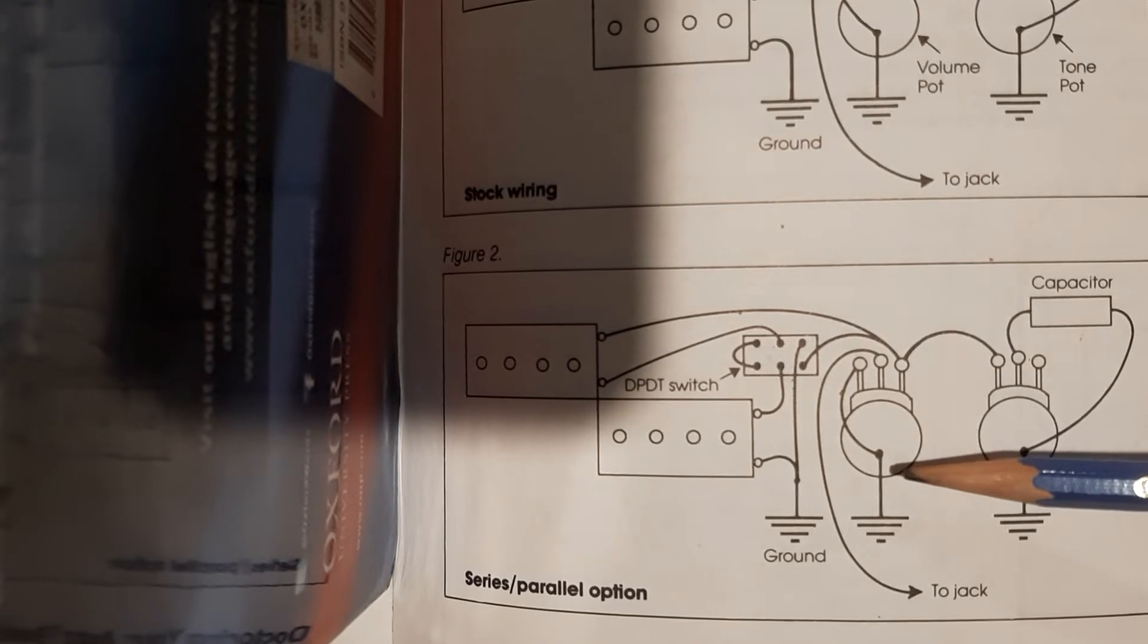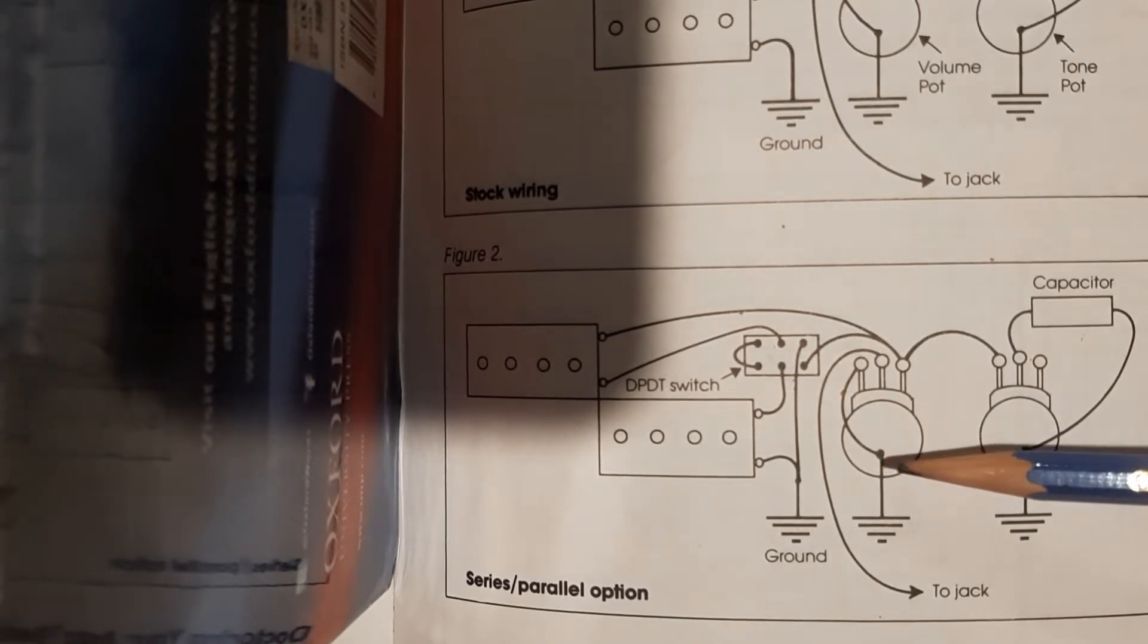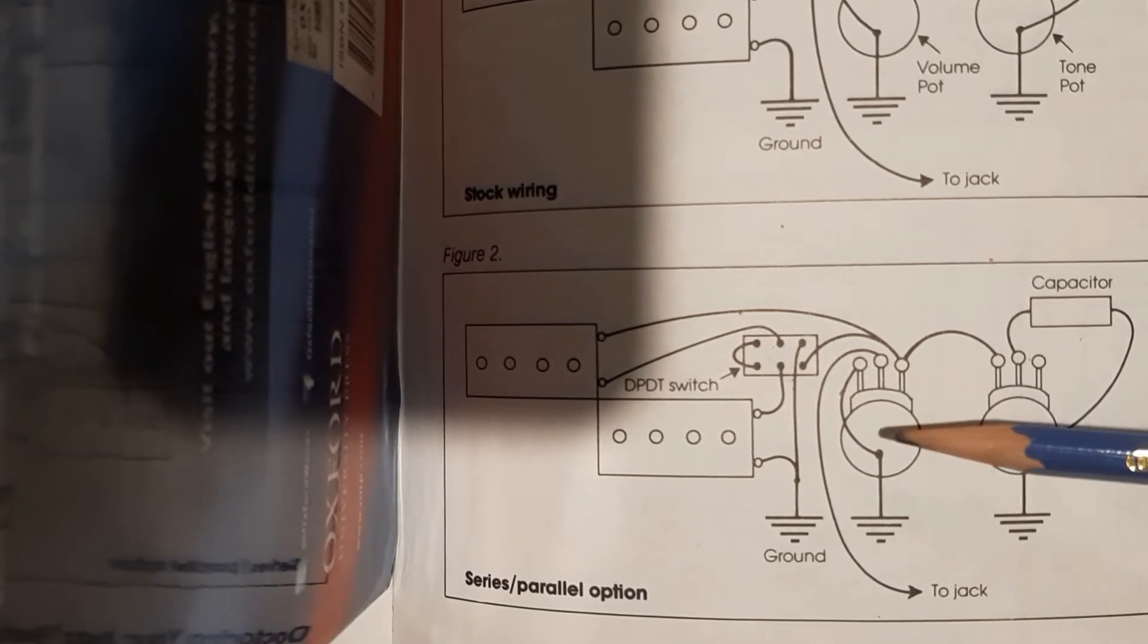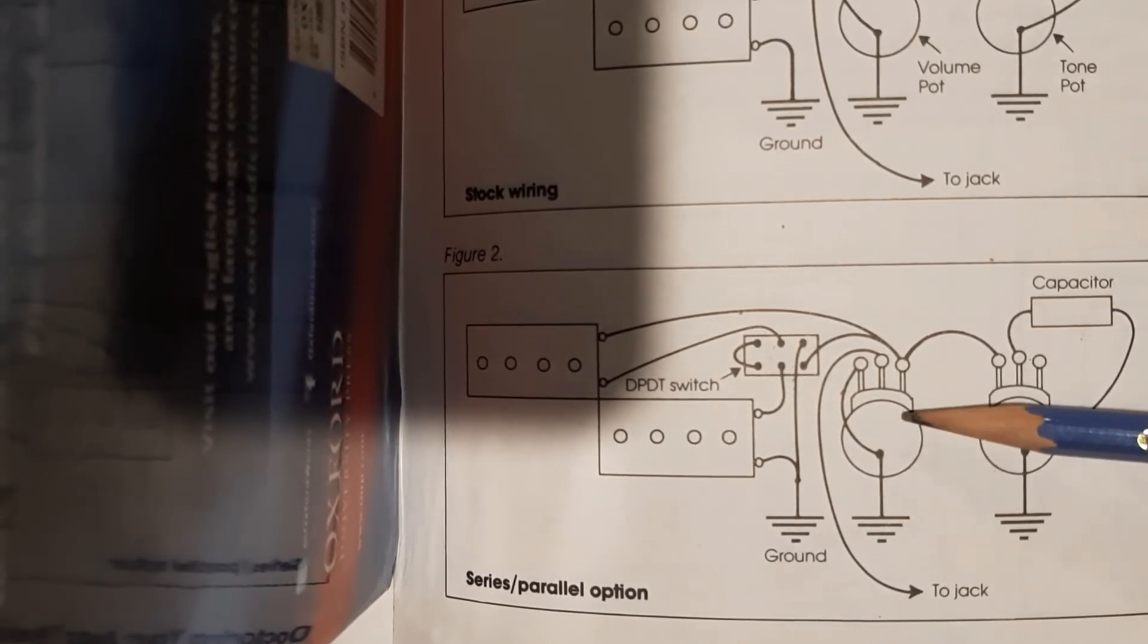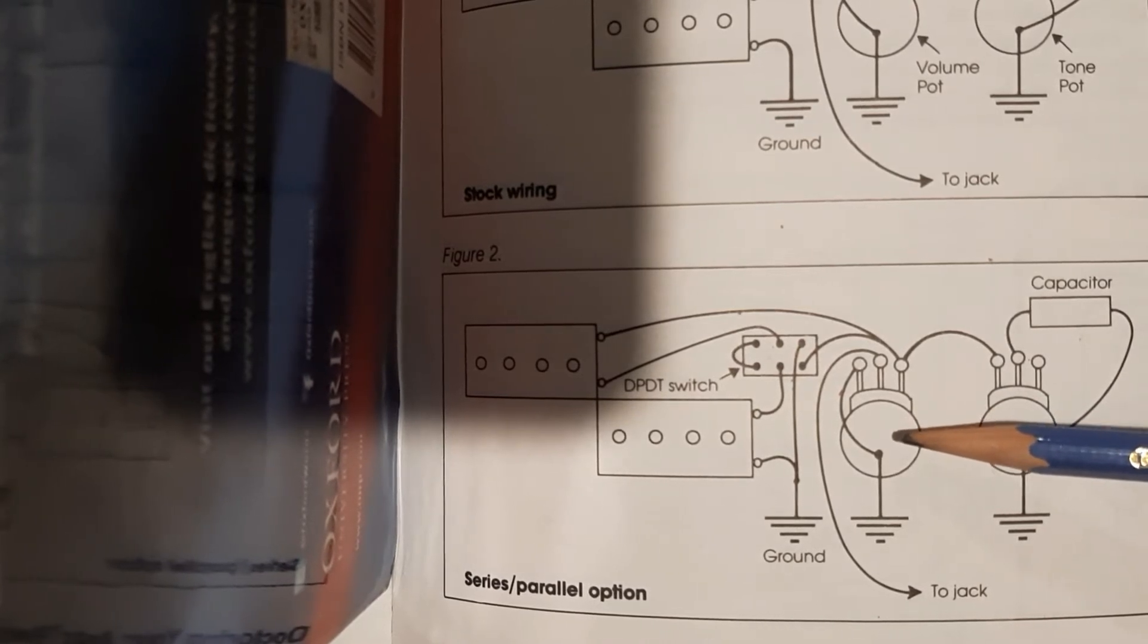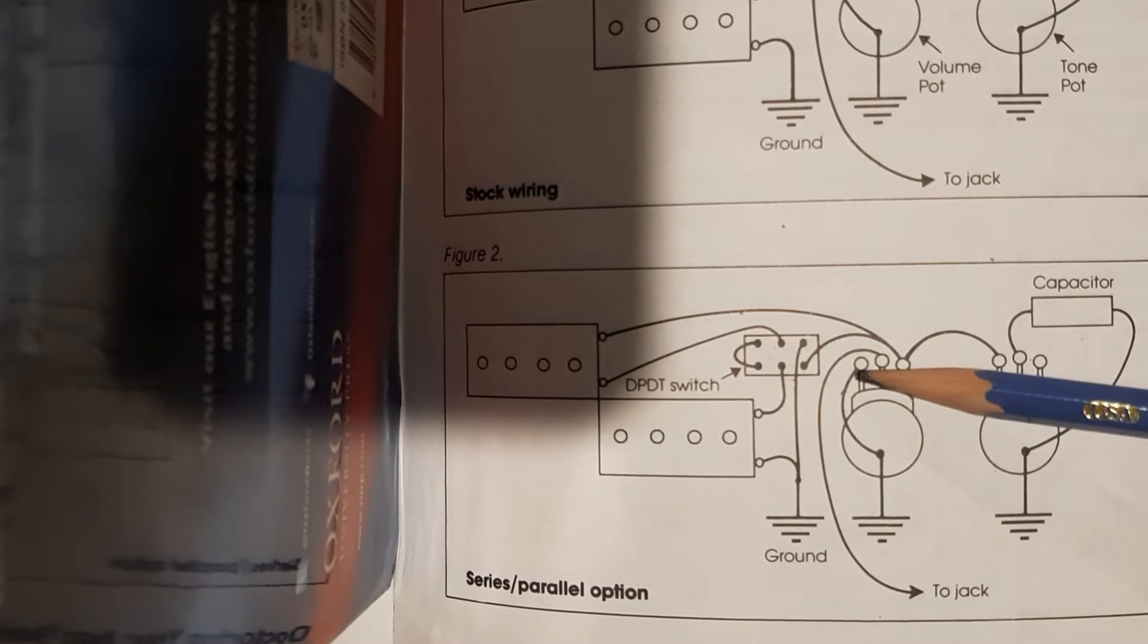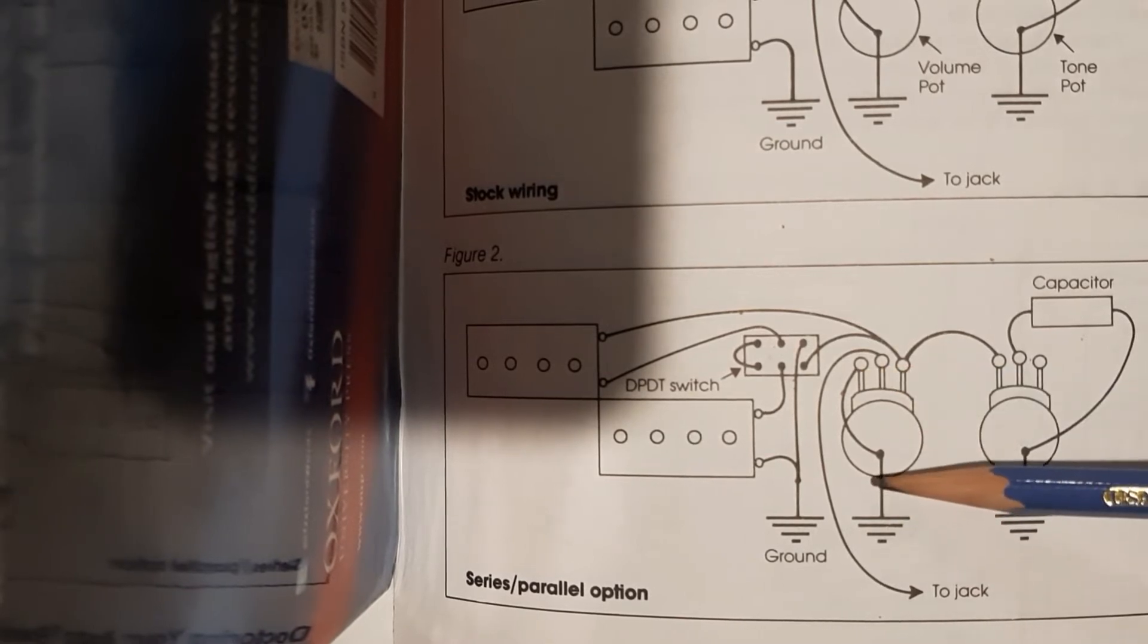The reason they sound different is they're not perfect. A volume pot is not perfect. Even when you have the volume all the way up, so it's on 10, your guitar is as loud as it can be, these things still will take some of the signal and take it to ground.